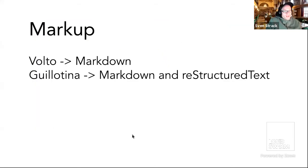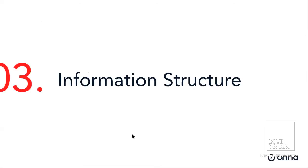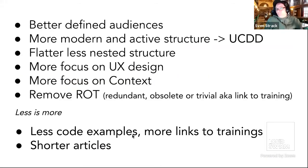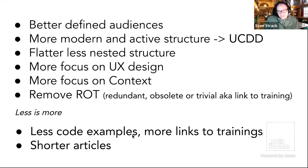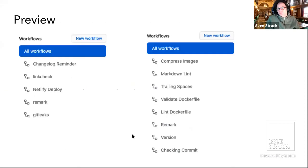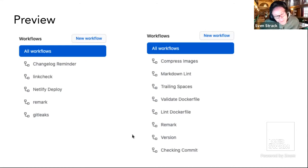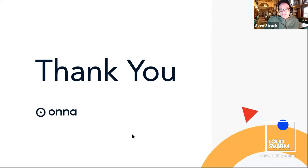For markup: Volto — also known as Plone 6 — will be in Markdown, and your classic Plone team will be in Markdown and reStructuredText. We're focusing on audiences with user-case-driven documentation, a flatter structure, removing old content, linking more to training, and making shorter examples. We now use 12 different linters with around 160 different tests — and they are blazing fast. A test run for docs.plone.org took something like 10 seconds to test and deploy.